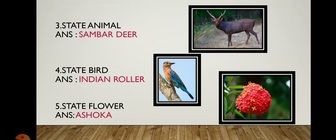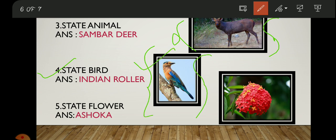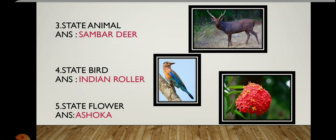Here are some images of the Sambar Deer, the Indian Roller, and the Ashoka flower. The state animal is the Sambar Deer — this is its image. The state bird is the Indian Roller — this is the state bird of Odisha. The state flower is the Ashoka flower — this is what it looks like.